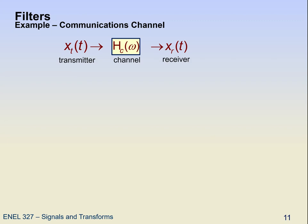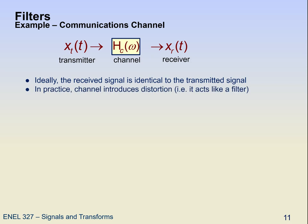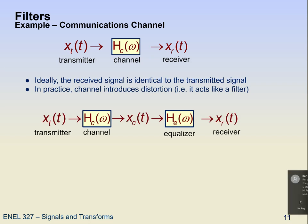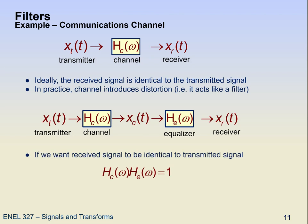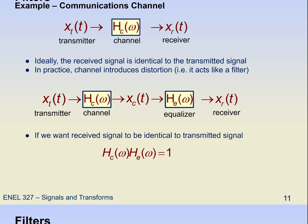For example, in a communications channel we have a transmitter, the channel, and a receiver — the channel is basically the medium over which the signal transmits, whether a wire, fiber optic cable, or through the air. Ideally the received signal would be identical to the transmitted signal, but in practice that channel is a filter and it introduces distortion. One way to remove that effect is to characterize the channel and create a system called an equalizer which perfectly reverses the channel's effects, so we want H_c(ω) · H_e(ω) = 1 in the frequency domain.